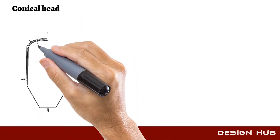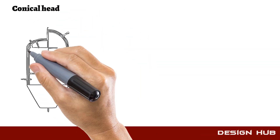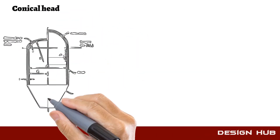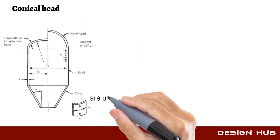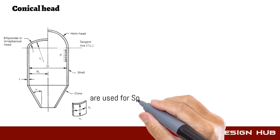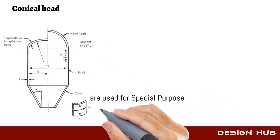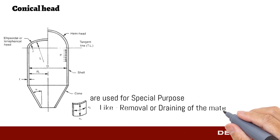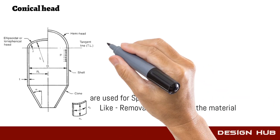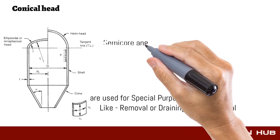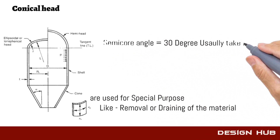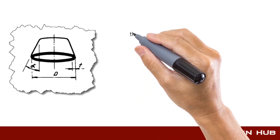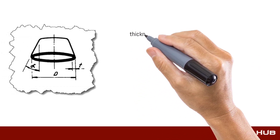Conical head is used for special purposes. This type of head is also used for removal or draining purposes. You can calculate thickness and pressure using these formulas.